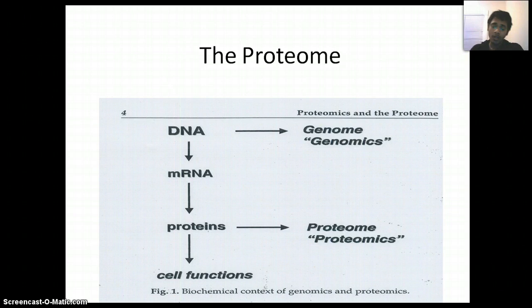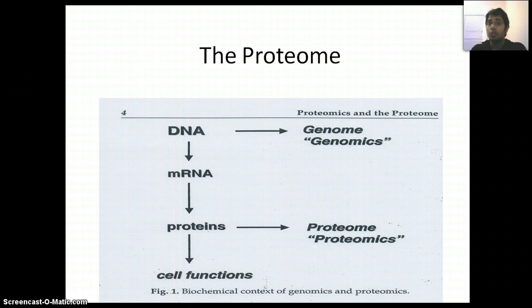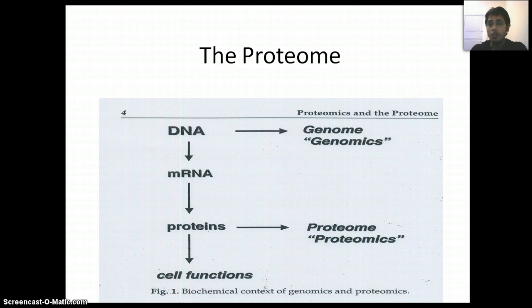Considering our cell life, the central dogma is something like that: DNA is converted to messenger RNA, and it's converted to protein. The total content of DNA of a cell is called genome, and the study of genome is called genomics. On the other hand, total content of protein in a cell is called proteome, and the study of proteome is called proteomics. The bottom line is that proteomics is a study of protein content in a cell.